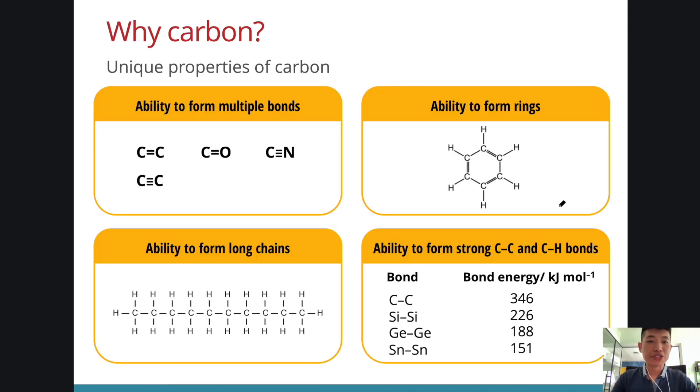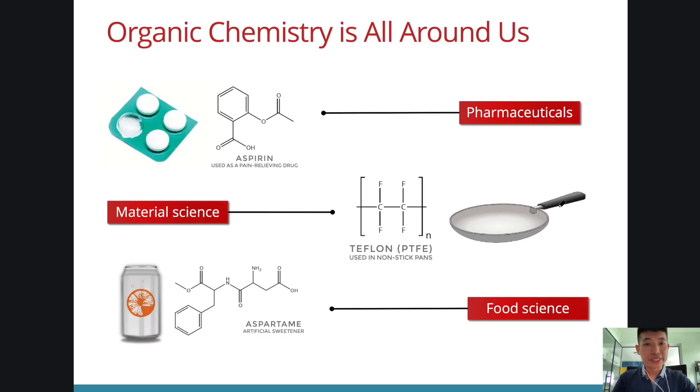Why do we need a branch of chemistry just to study carbon compounds? It's because there are so many compounds around us that are made using carbon. It is because of the unique properties of carbon that enable carbons to form bonds to so many different kinds of elements and in so many different ways. Just to share with you that carbon can form multiple bonds—single bond, double bond, triple bonds. Carbon can also form structures in the form of rings. It can form very long chains. And the strength of covalent bonds between carbon atoms is relatively strong. And this is why nature chose carbon as one of the essential elements for life.